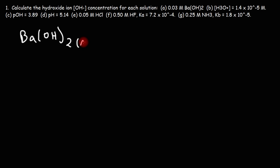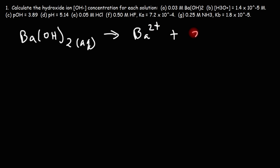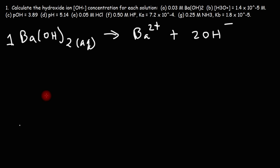Barium hydroxide is soluble in water and it's going to dissociate into the Ba²⁺ ion and two hydroxide ions. Notice the ratio between barium hydroxide and hydroxide — it's a one to two ratio. So if the concentration of barium hydroxide is 0.03 M,